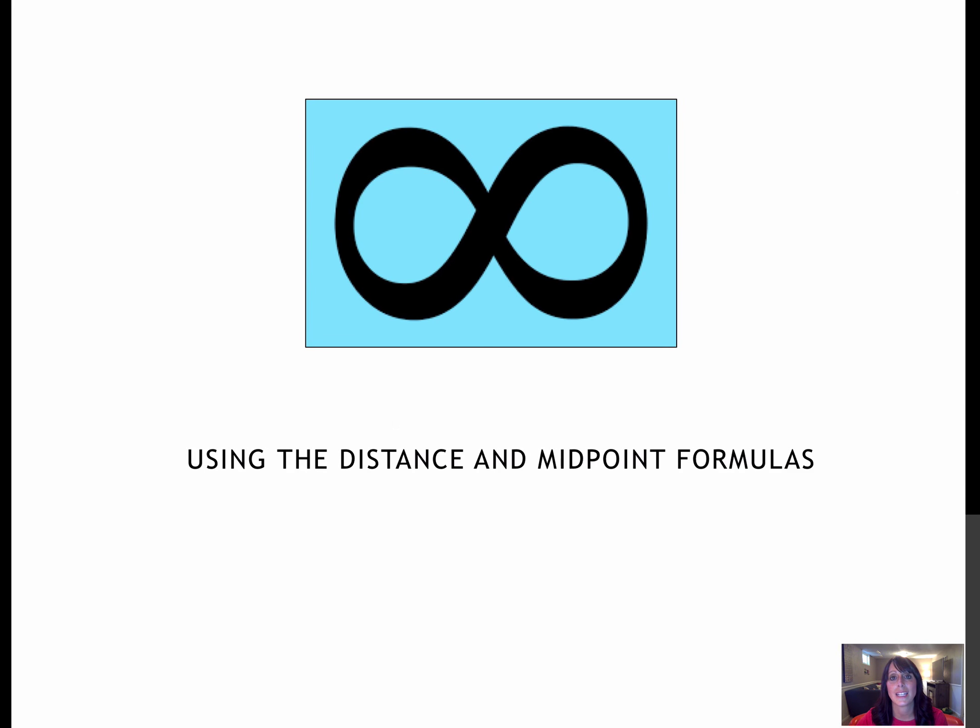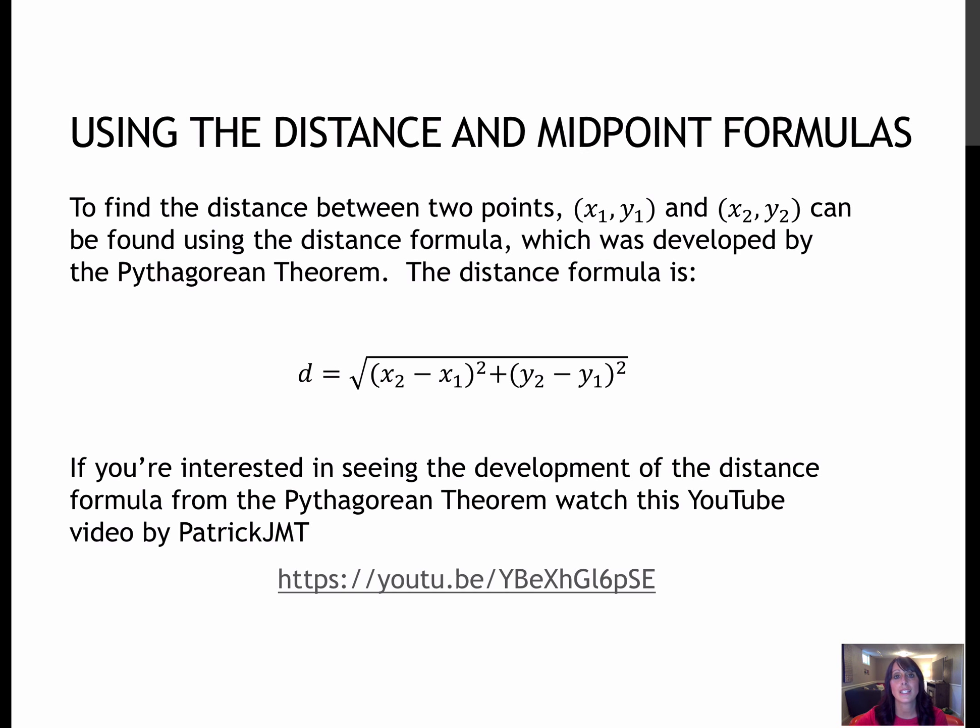In this lesson, we will learn the distance and midpoint formulas. The distance formula helps us find the distance between two points, the direct distance as the crow flies. It can be found using the Pythagorean theorem. I didn't want to waste time on that, but I linked a great YouTube video from Patrick JMT who goes through the steps for how we get from the Pythagorean theorem to the distance formula.